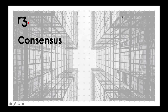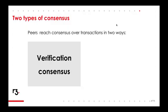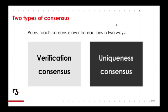Now we're going to talk about consensus on Corda. Consensus splits into two buckets: verification consensus and uniqueness consensus. Verification concerns whether an update to the ledger is valid or not, and uniqueness concerns whether an update is unique — that is, whether it has tried to double spend another state on the ledger, meaning all input states referenced in a transaction have not been used before.